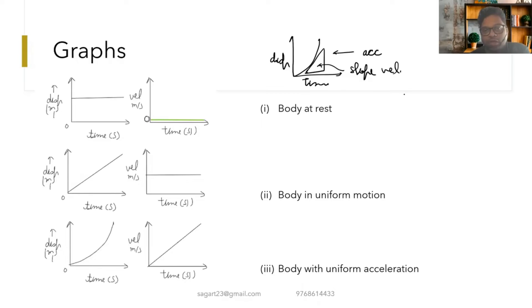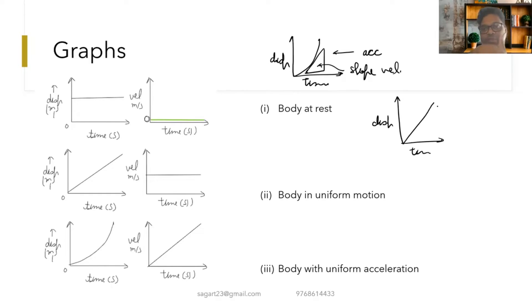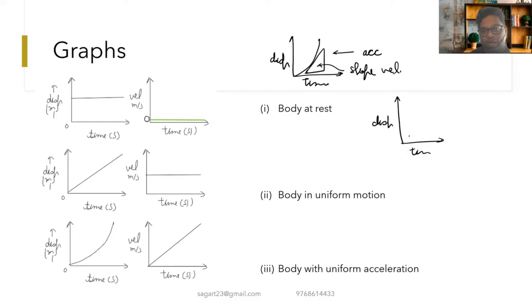To summarize graph interpretations: if the displacement-time graph is a curved line, that indicates acceleration. If it is a straight line, that means uniform velocity and acceleration is zero. If it is a horizontal line, the body is at rest and acceleration is zero.